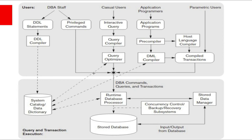DBMS is a complex software system. This diagram is a simplified form of typical DBMS components. The database and data dictionary are usually stored on the disk. Access to the disk is controlled by the operating system with the help of the file system. The DBA staff works on defining and tuning the database. The DDL compiler processes schema definitions specified in the DDL and stores descriptions of the schema in the data catalog or data dictionary. The catalog contains information such as names, sizes of files, names and data types of data items, storage details of each file, mapping information among schemas, and constraints.